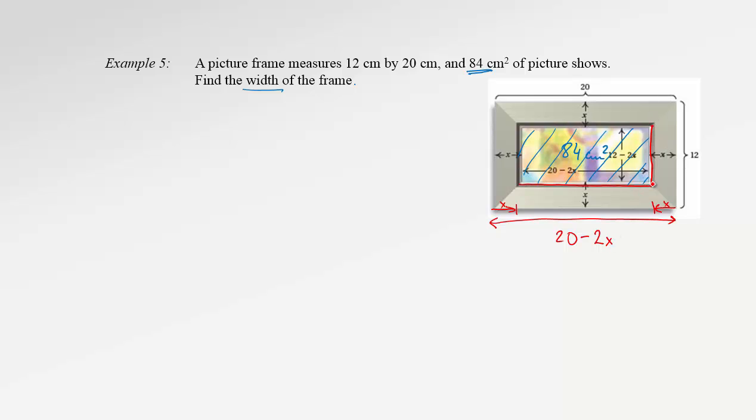Similarly, the width of the inner rectangle will be the whole width, which is 12, minus the width of the frame taken twice. Because from this side and from that side, right? Therefore, this expression is 12 minus 2x.